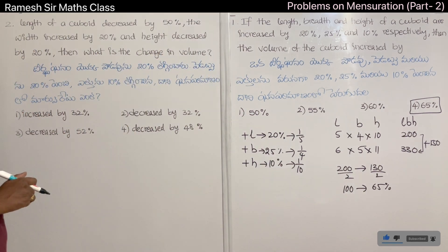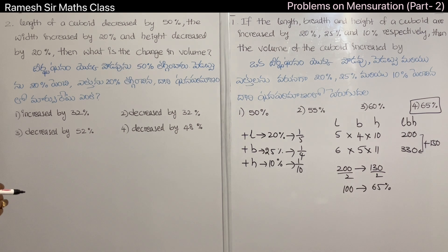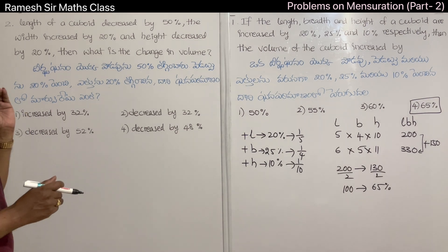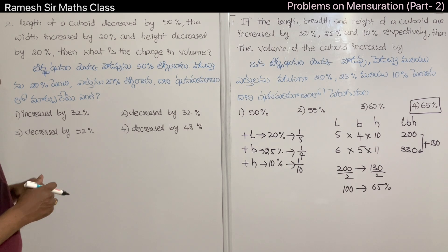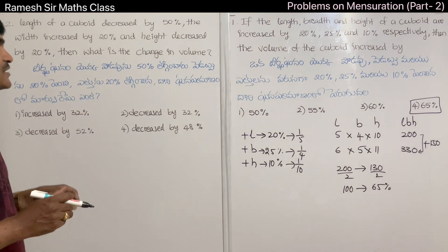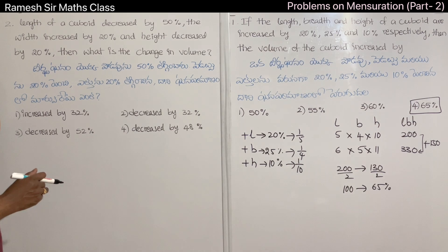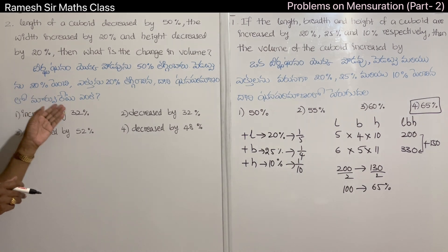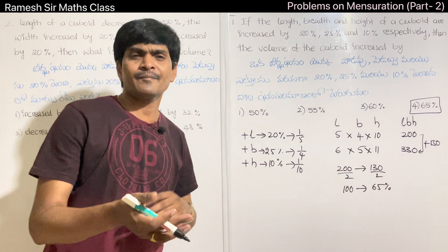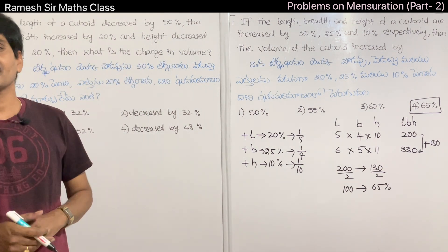Next, problem 2: The length of a cuboid is decreased by 50%, the width is increased by 20%, and the height is decreased by 20%. What is the change in volume? We will find out whether the volume increases or decreases.